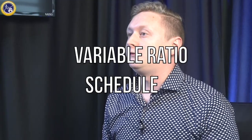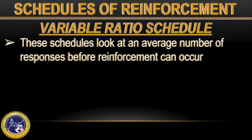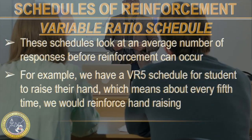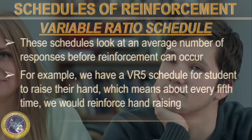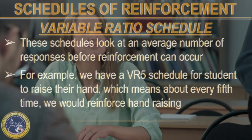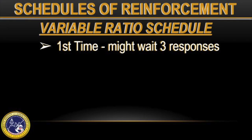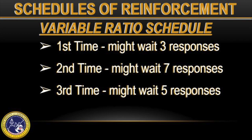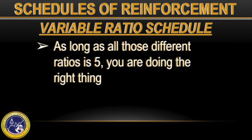Next is a variable ratio schedule. These schedules look at an average number of responses before reinforcement can occur. For example, a variable ratio five or VR5 schedule for hand raising means that about every fifth time we're going to reinforce that hand raising. So the first time we might wait three responses, the second time seven, the third time five, and so on — as long as the average of all those different ratios is five, you're doing the right thing.